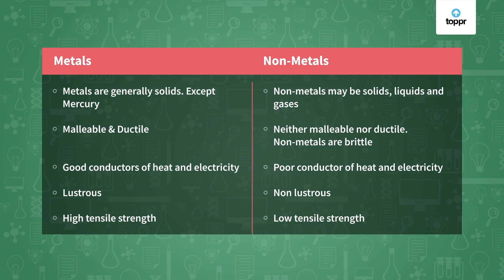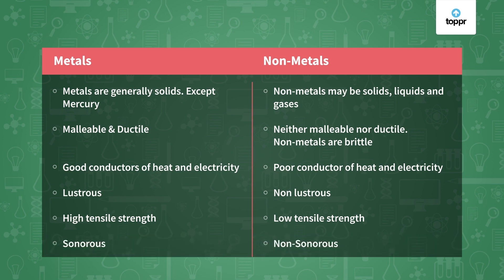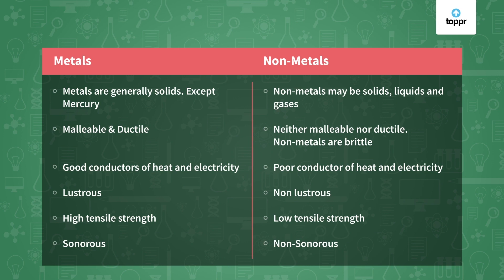Metals have high tensile strength — that means however much pressure you apply on them, they do not break easily — whereas non-metals do break easily, so they have low tensile strength. Metals are sonorous, meaning they make a ringing sound when you strike them, but non-metals are non-sonorous. So metals and non-metals are quite opposite to each other.